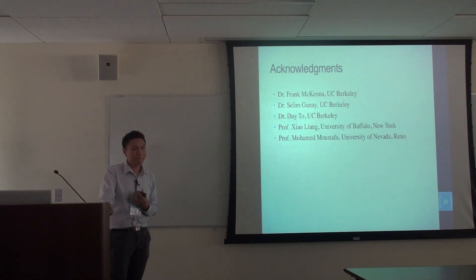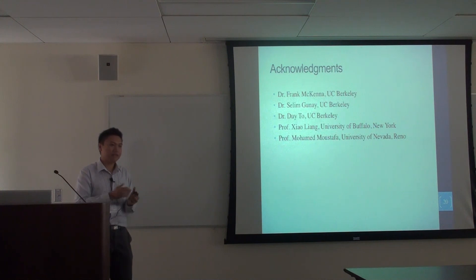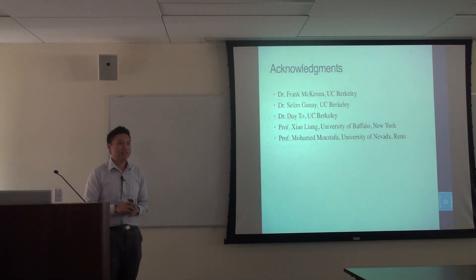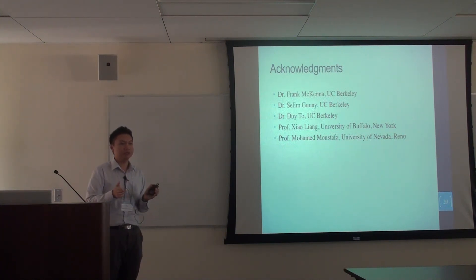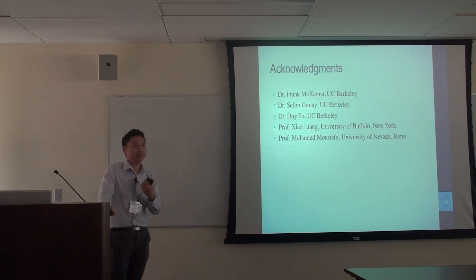On the question of how to set collapse thresholds for different failure modes and damage states, the speaker explained that this comes from a combination of literature review and analysis. Multiple nonlinear time history analyses are performed and post-processing scripts extract different EDPs. A literature review identifies the range of EDP values associated with different damage states of bridge components, and those ranges serve as guidelines to decide whether or not physical collapse has occurred.